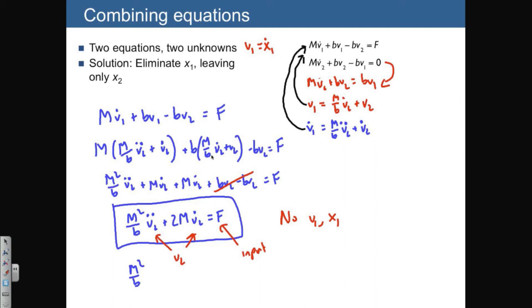Remember v is just x dot, so v double dot is just going to be x triple dot. So this means that we have an equation m squared over b times x2 triple dot plus 2m x2 double dot is equal to f.